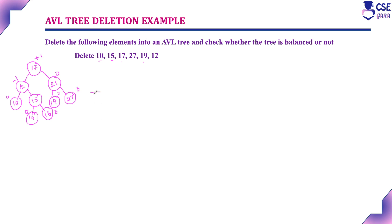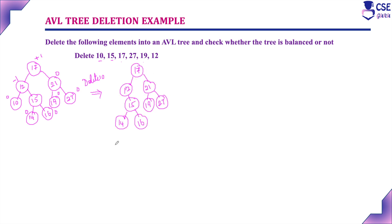The first step is to delete element 10. After deleting element 10, the tree will be updated. Check the balance factor now. The leaf nodes are 0, and here it is 0 minus 2, so this node is unbalanced. Here it is 0 and 3 minus 2 equals plus 1 only. Only at that node the tree is unbalanced.